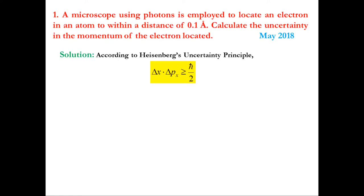Here, Δx is the uncertainty in measuring the position of a particle at a certain instant whenever the momentum is measured accurately, and Δpx is the uncertainty in momentum obtained while position is measured with accuracy. The product of these two is always greater than or equal to ħ/2.